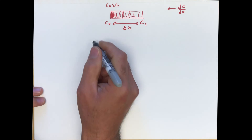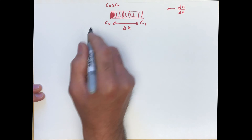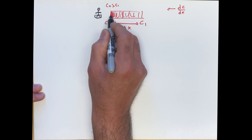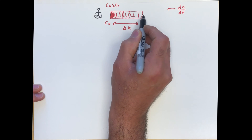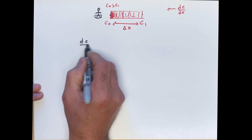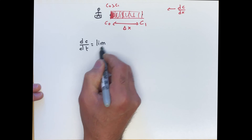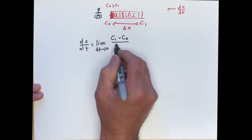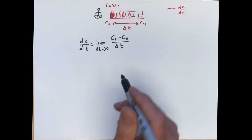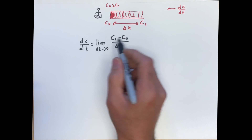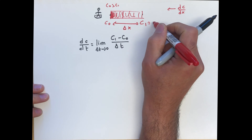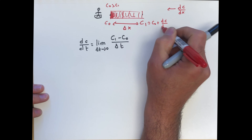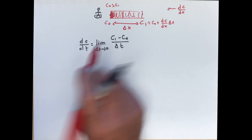What is dc/dt from the perspective of the person on the boat? They're going to hit C0 and then C1. So dc/dt is the limit as delta T approaches 0 of (C1 minus C0) over delta T. Because this is an infinitesimal distance, we can say that C1 is approximately equal to C0 plus (dc/dx) times delta X, using the spatial gradient.